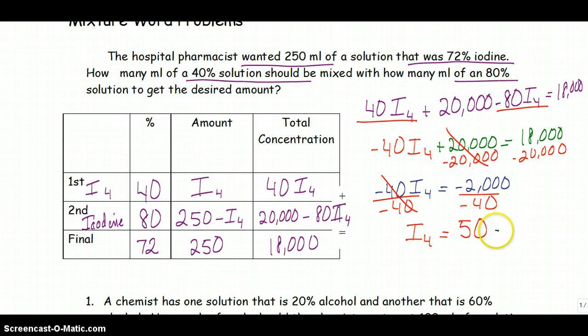So if I have 50 milliliters of the 40% solution, I'm going to need 250 minus that of my 80% solution. So my 80% solution, I'm going to need 200 milliliters.